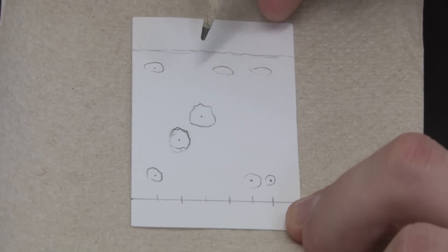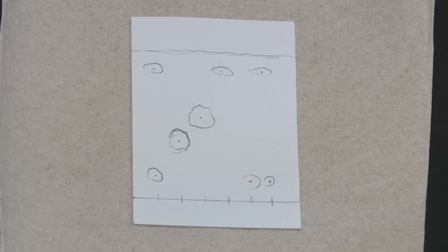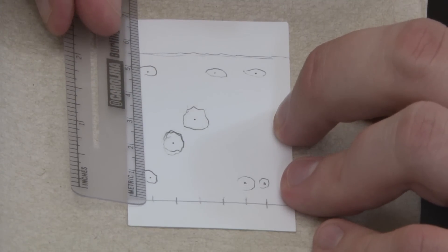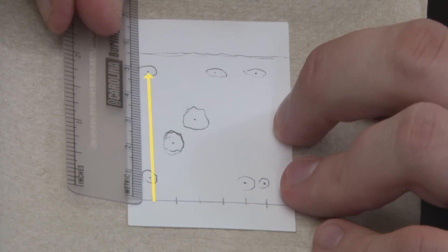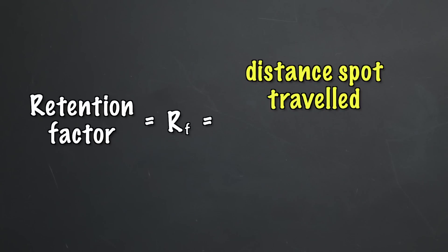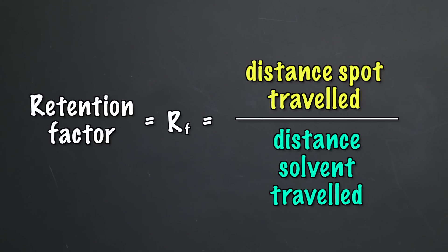To record this data, you'll need to measure the distance from the starting line to the center of each spot. If your unknown has multiple spots, you need to measure to the center of each spot. The distance the spots travel will depend on the size of your TLC sheet, but a substance that moves halfway up a sheet should move halfway up any size sheet. That's why we need to calculate the retention factor, or RF, of each spot.